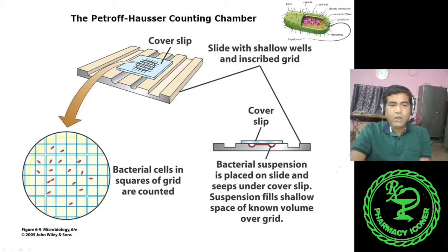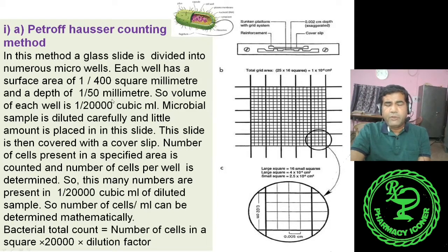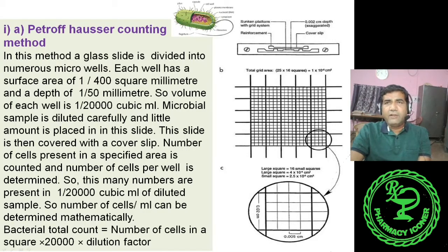Many small squares are counted, and then we can calculate the number of cells using the formula: number of cells in a square (average) multiplied by 20,000 — since the volume is 1/20,000 cubic millimeter — multiplied by the dilution factor. If you diluted 1 to 10, multiply by 10; if 10,000 times, multiply by 10,000. This way we can determine the total number of cells per ml.